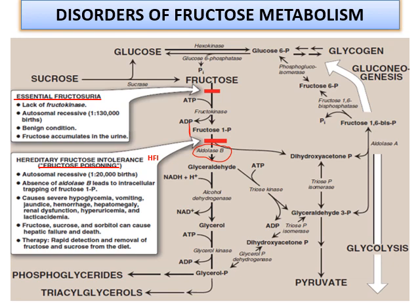Deficiency of aldolase B results in high levels of fructose 1-phosphate and high fructose. Accumulation of fructose and fructose 1-phosphate contributes to hepatomegaly — enlargement of the liver — ultimately resulting in liver dysfunction. Jaundice may be a symptom associated with liver dysfunction. Accumulation of fructose and fructose 1-phosphate may also affect kidney function, ultimately leading to renal dysfunction.